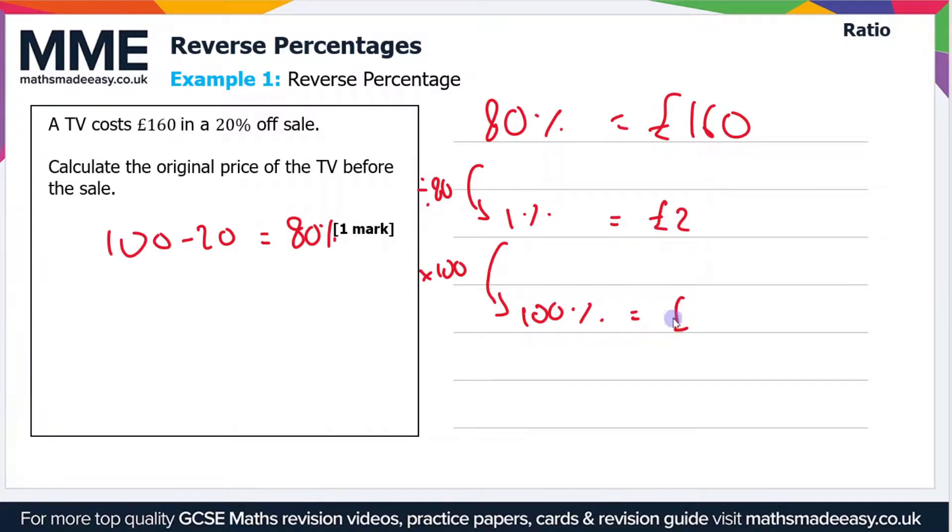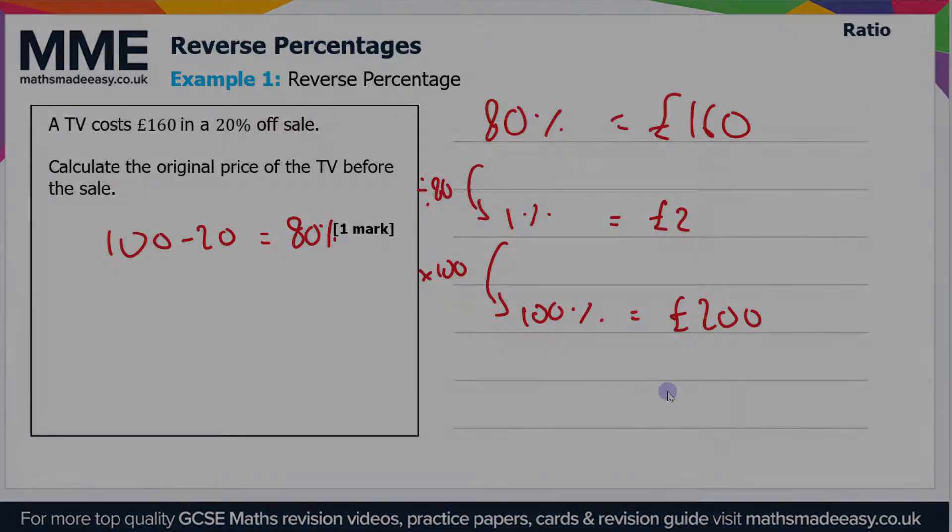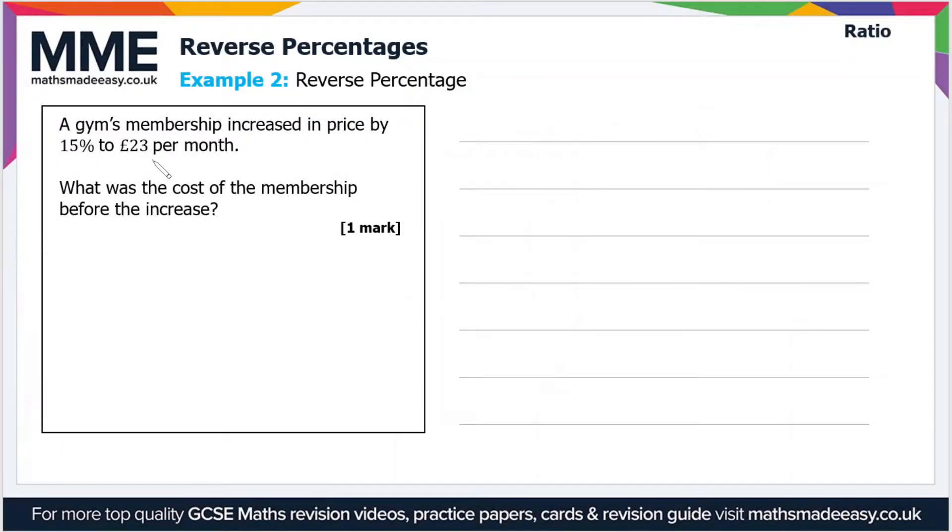Moving on to the second example, a gym's membership increased in price by 15% to £23 per month. What was the cost of the membership before the increase? This time we've got an increase, so if it's increased in price by 15%, then it's 100% plus 15, so 115%, and that is equal to £23.